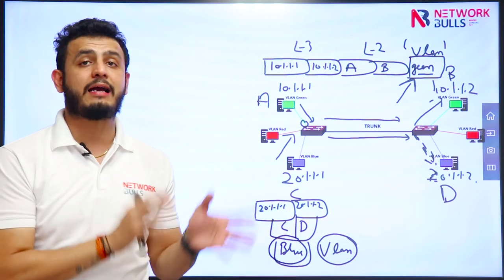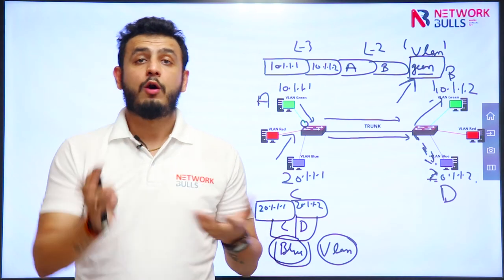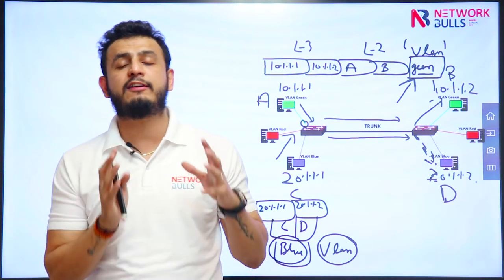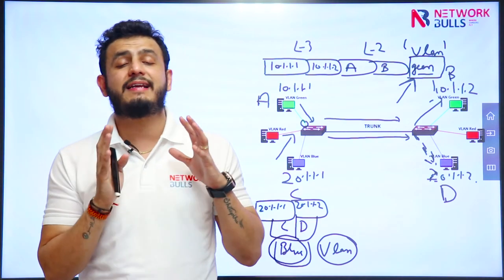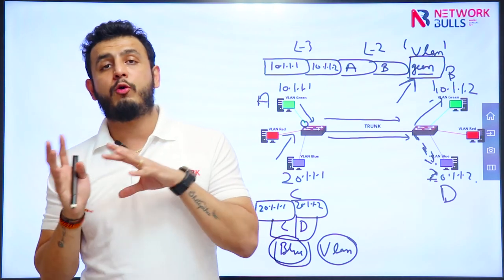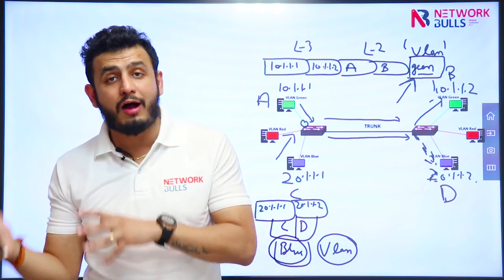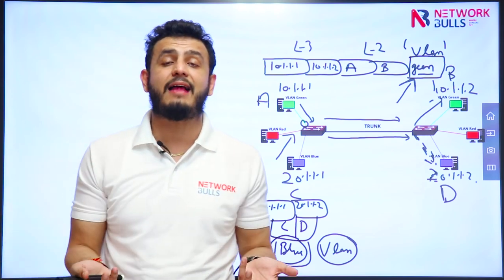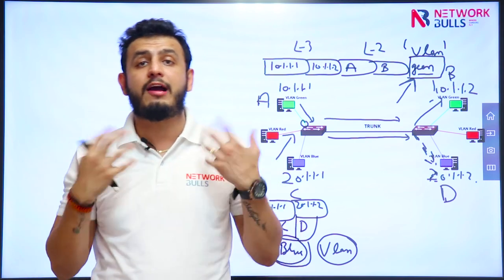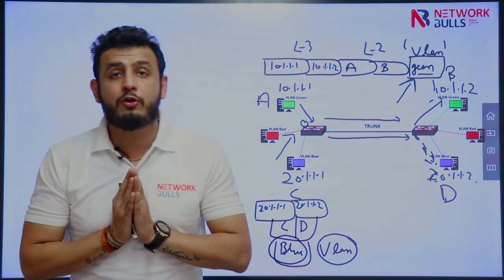In conclusion: access ports carry information related to one VLAN, while trunk ports carry information related to all VLANs — or multiple VLANs. To differentiate multiple VLAN traffic on trunk ports, we use the concept of tagging. Thank you.